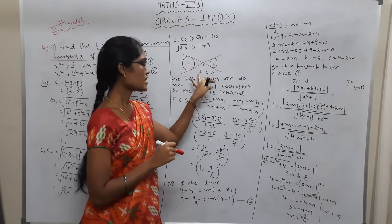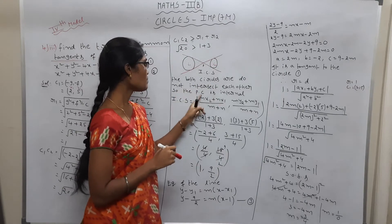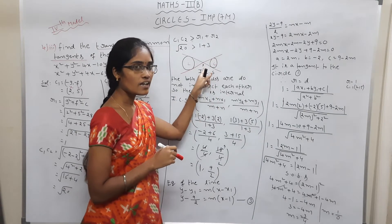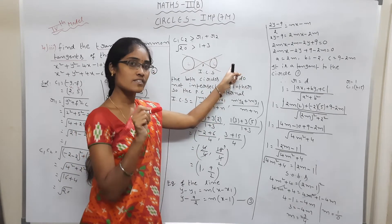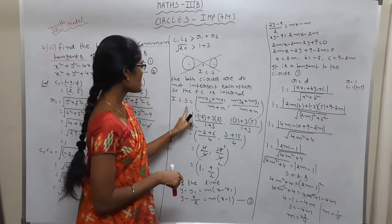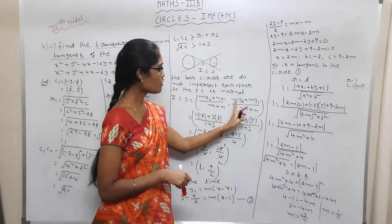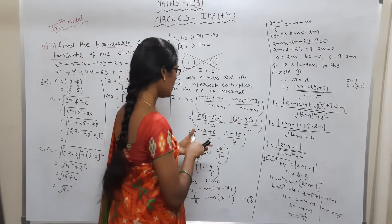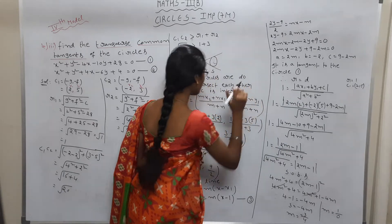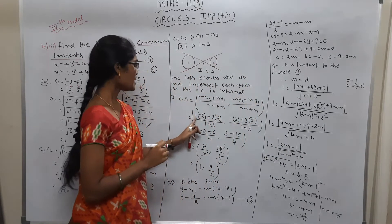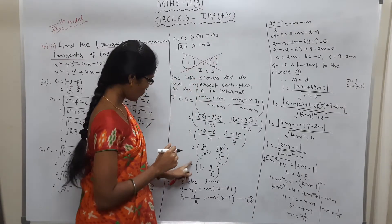For the transverse common tangent, since both circles do not intersect each other, the point of contact is internal. We use the internal section formula: (mx2 + nx1)/(m+n), (my2 + ny1)/(m+n). Substituting the M value and the coordinates x1, y1, x2, y2, the key point is (1, 9/2).